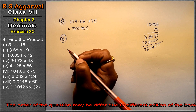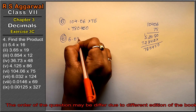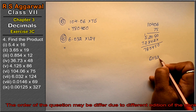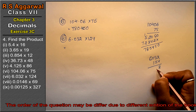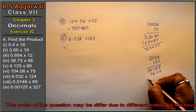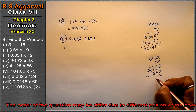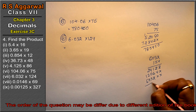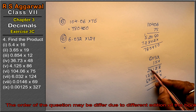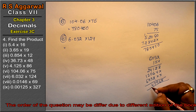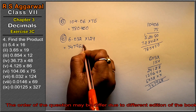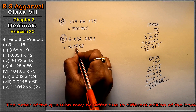Let's do the 7th part. 7th part is 6.032 into 124. So 6032 multiplied by 124. 4 × 2 is 8, 4 × 3 is 12, and 4 × 6 is 24. 2 × 2 is 4, 2 × 3 is 6, 0, 2 × 6 is 12. Then continuing: 8, 8, 6, 8 and 9, 4 and 3, 7, 4 and 7 — giving 747968. Placing the point 3 digits from the right gives 747.968. This is the answer.